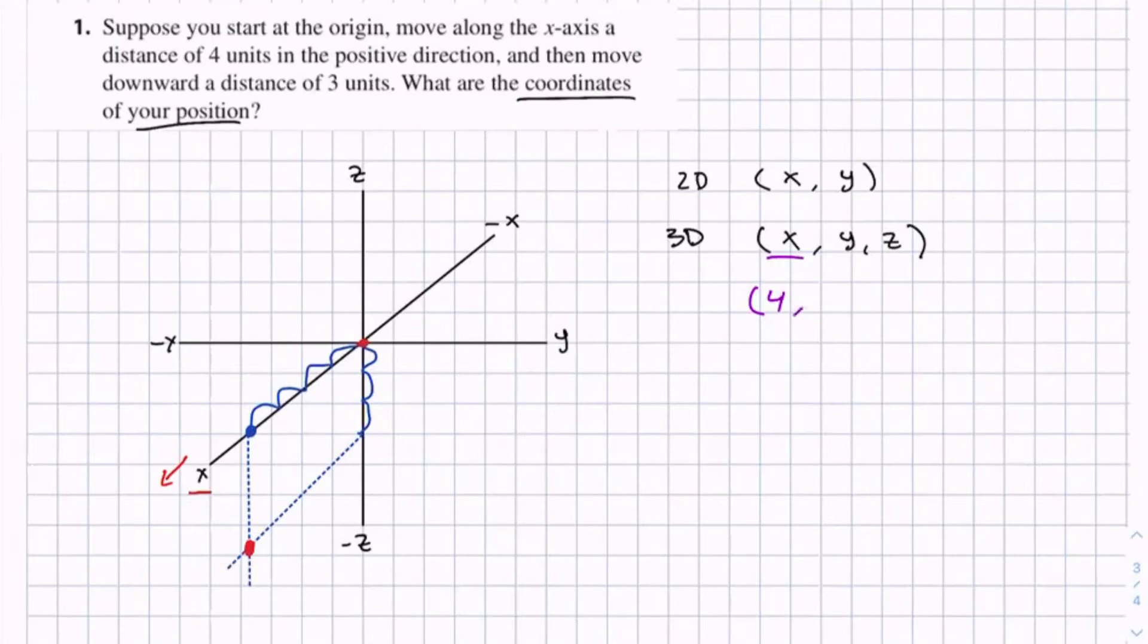And then for the y-axis, or y-direction, we didn't move at all in the y-direction. We stayed in the x-z plane, so y is going to be 0. And then for z, we moved down 3, so it's going to be negative 3.